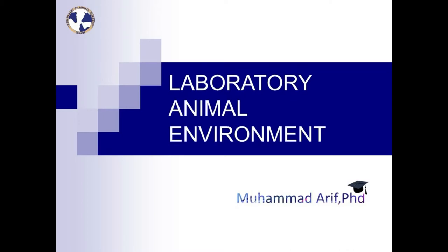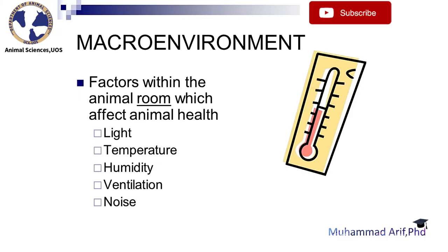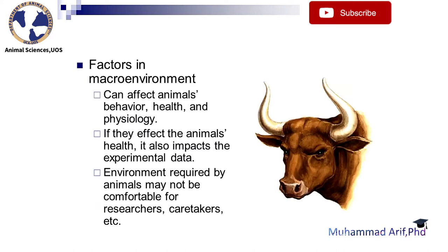Laboratory Animal Environment. The macro-environment consists of factors within the animal room which affect animal health, including light, temperature, humidity, ventilation, and noise. These factors in the macro-environment can affect animals' behavior, health, and physiology. If they affect the animal's health, it also impacts the experimental data.